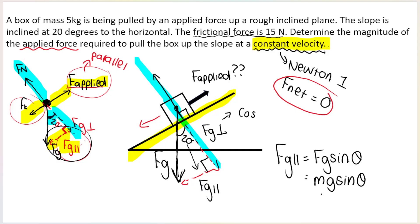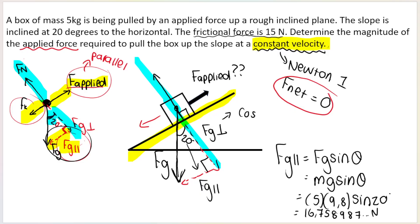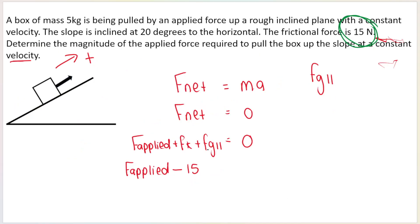FG parallel equals mass times gravitational acceleration times sine of the angle. The mass is 5, g is 9.8, and the angle is 20. Working this out gives 16.758... You can work it out but don't round it off in the middle of the question. I'm going to substitute in 5 × 9.8 × sin 20 directly for FG parallel.